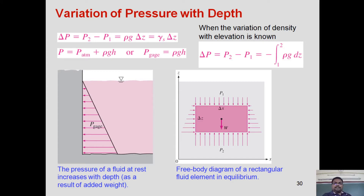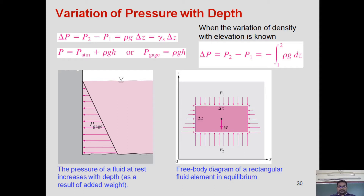When the variation of density with elevation is known, we can write minus ρg dh. This pressure equation applies when measuring pressure in the direction where gravity is decreasing — that means when we are measuring pressure while going away from the center of the earth. In that case, pressure will be minus ρgh. This is a simple equation that can be used to find pressure variation.